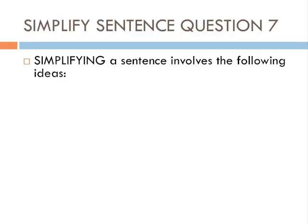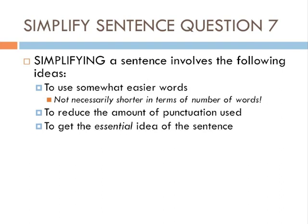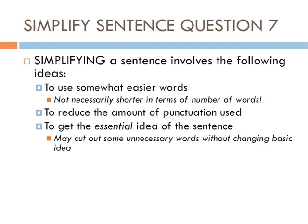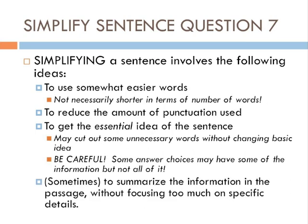Simplifying a sentence on the test involves the following ideas: to use somewhat easier words, though not necessarily shorter in terms of the number of words; to reduce the amount of punctuation that's used; to get the essential idea of the sentence, which means cutting out some unnecessary words without changing the basic idea. Be careful — some answer choices may have some of the information, but not all of it. And sometimes to summarize the information in the passage without focusing too much on specific details.